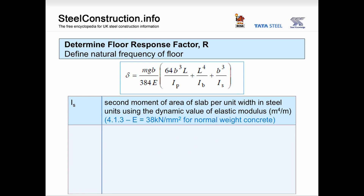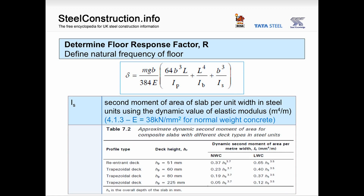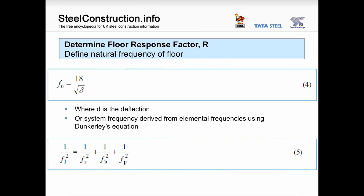For the slab, you can calculate the composite inertia from first principles, or use the table provided in P354. This gives simplified formulae for a quick assessment of slab inertia, depending on whether it's normal-weight or lightweight concrete and what profile type is used — much easier than calculating from first principles.